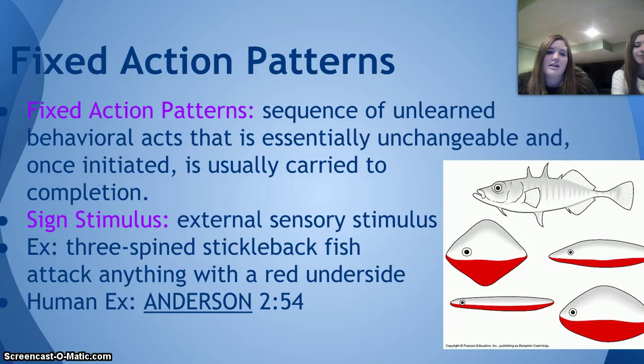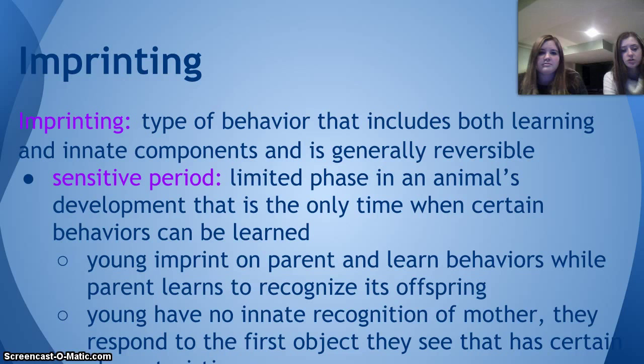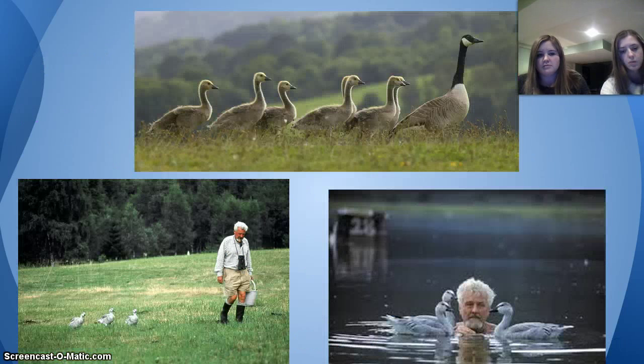Imprinting is a type of behavior that includes both learning and innate components, and is generally irreversible. Every imprinting has a sensitive period, which is a limited phase in an animal's development that is the only time when certain behaviors can be learned. When the young imprints on their parent, they learn behaviors while the parent learns to recognize its own offspring — they don't automatically recognize each other. The young has no innate recognition of the mother and responds to the first object with certain key characteristics. This is illustrated by Conrad Lorenz's famous experiment where ducks imprinted on him.